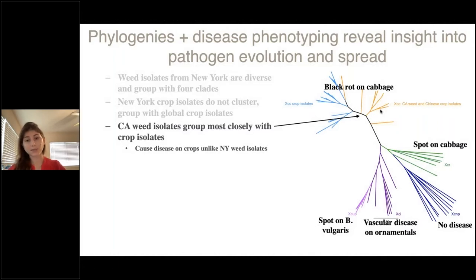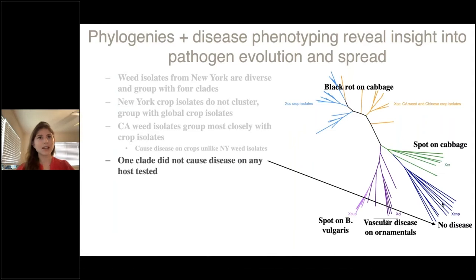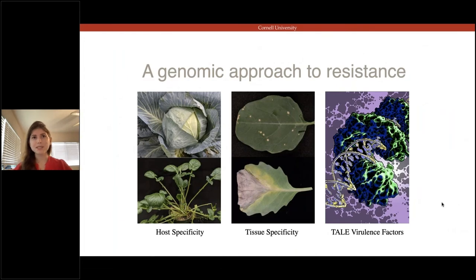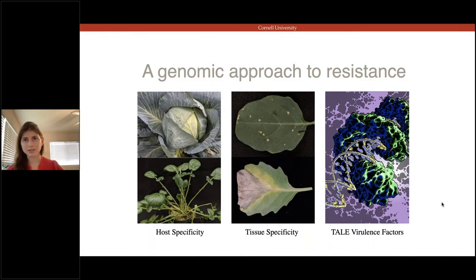We also saw this group of strains, which we call XCNP or XC nonpathogenic. These were very closely related to each other, but they didn't cause disease on any plant that we tested. This is really interesting because having non-pathogenic strains can help you identify what important virulence factors are in the pathogenic ones. This sequencing really opened the door to quite a few projects. We looked at the basis of host specificity between different groups of strains, found preliminary evidence for the molecular basis of tissue specificity for vascular versus spotting diseases. I'll focus now on why PacBio sequencing was so vital for this research.